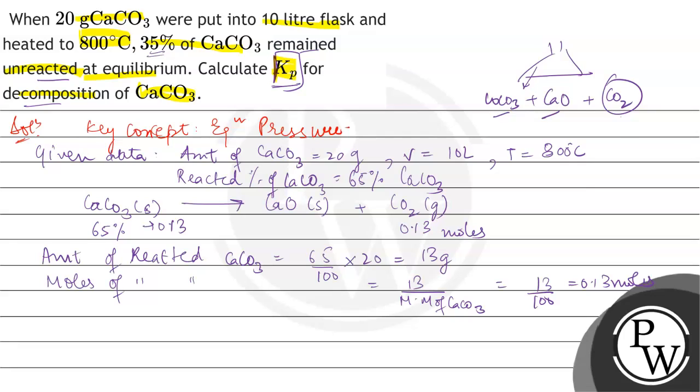We only count gaseous species, meaning the equilibrium pressure will be due to CO2 only. So we need to deal with moles of CO2. Next, using the ideal gas equation.